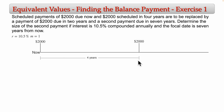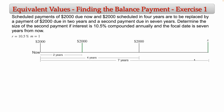These two scheduled payments are to be replaced by a payment of 2000 due in two years — I'll mark that replacement payment here at two years. I'll use green color to differentiate replacement payments from scheduled payments. We are scheduled to pay the original amounts, but instead we are paying 2000 in two years and another unknown amount X in seven years. So we need to find this balance payment X.